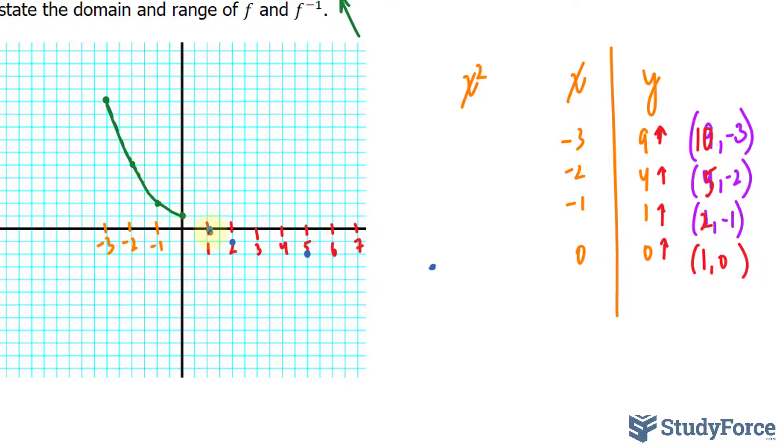So if I were to connect these, you would end up with a graph that looks like this. Now I did mention that the graph of the inverse is a reflection of the graph of the function about the line y = x.